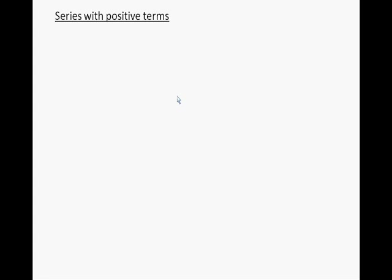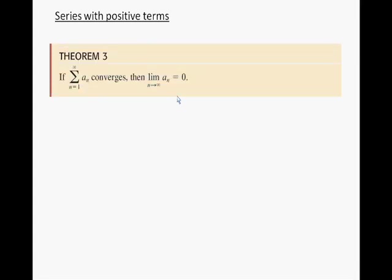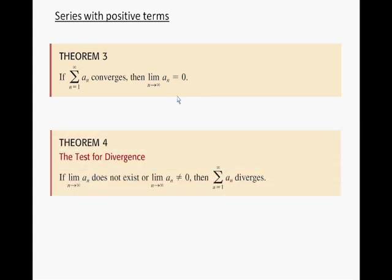Let's begin by looking at the following theorem. If our series converges, then the limit of the n-th term a_n as n approaches infinity is equal to zero. This should be intuitive and obvious. A consequence of that theorem is the test for divergence: if the limit of the n-th term does not exist, or the limit of the n-th term is not equal to zero, then the series diverges.